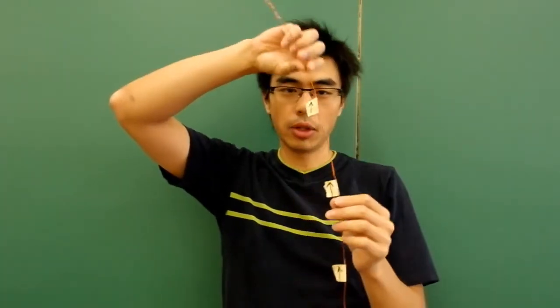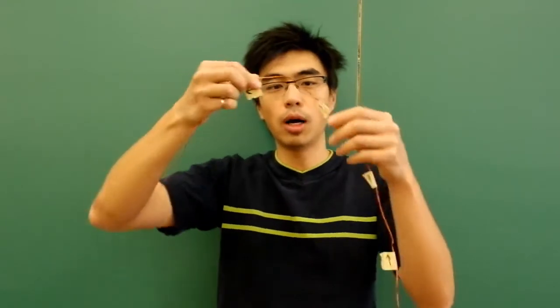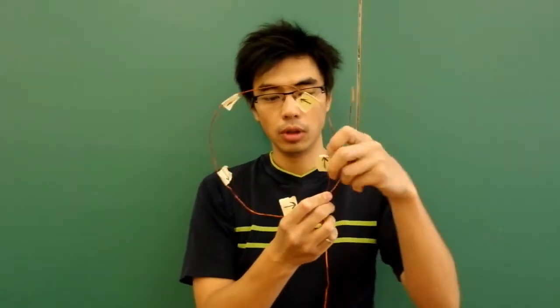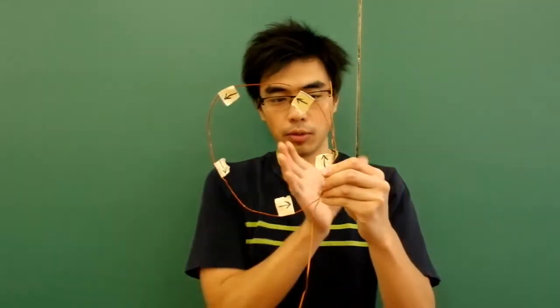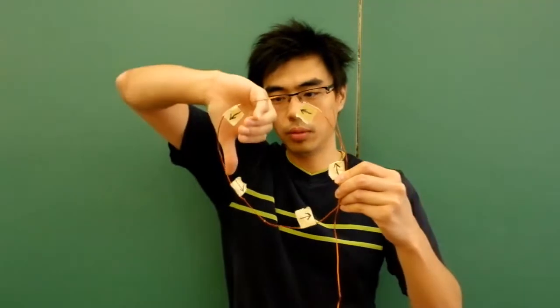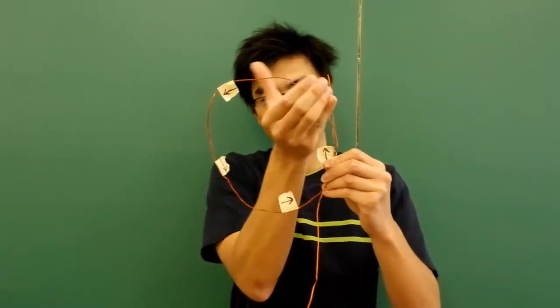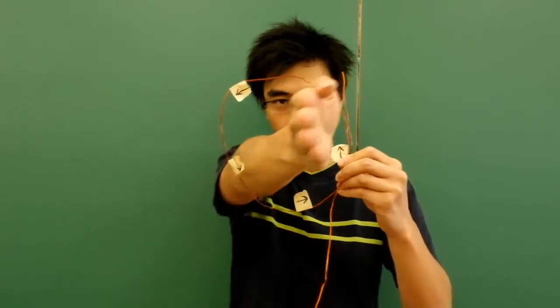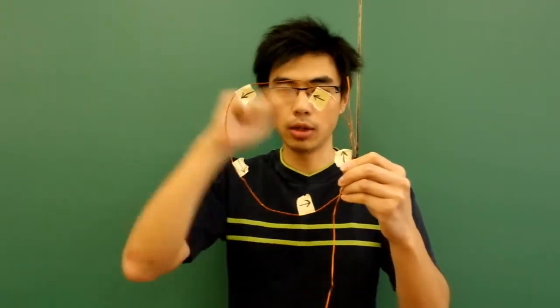Now something interesting happens if we coil the wire up into a circle. You can still see that the current goes around. And at each of these spots, if we do the right hand rule, we'll see that all the way around the circle, the magnetic field inside the loop goes this way, and outside loops back around.